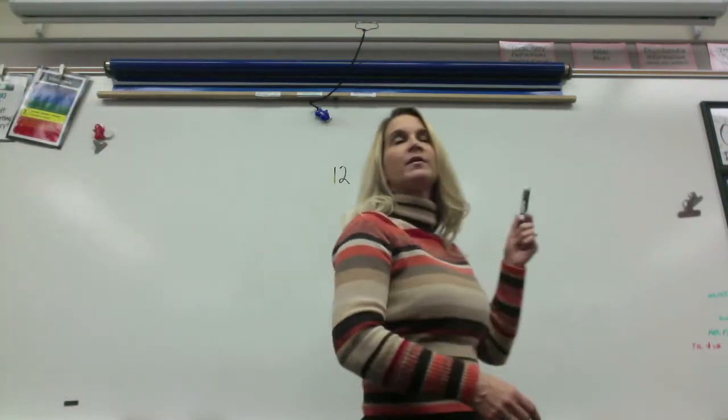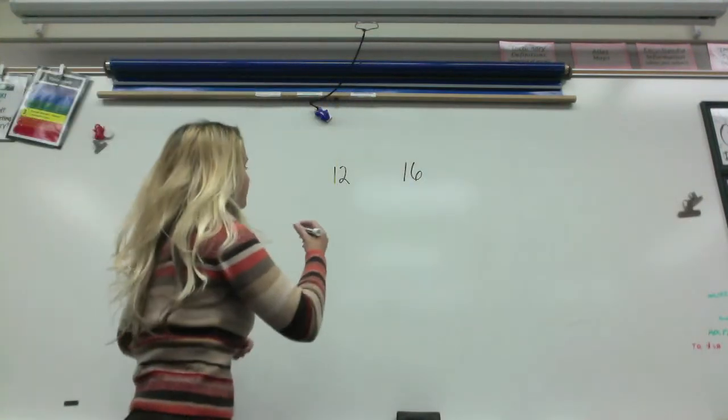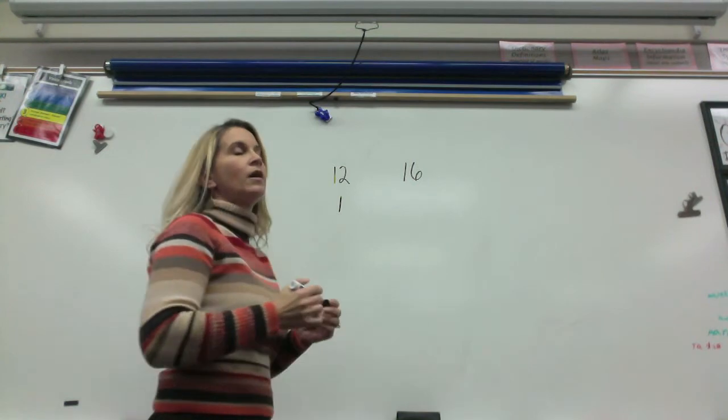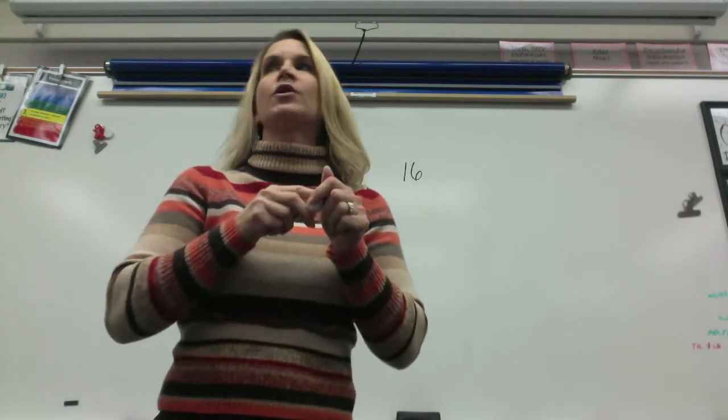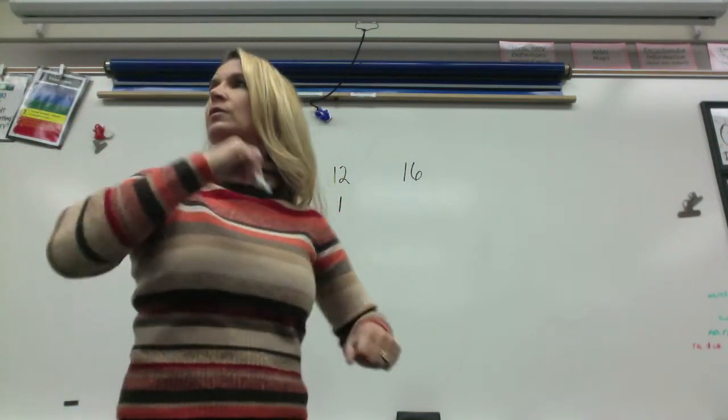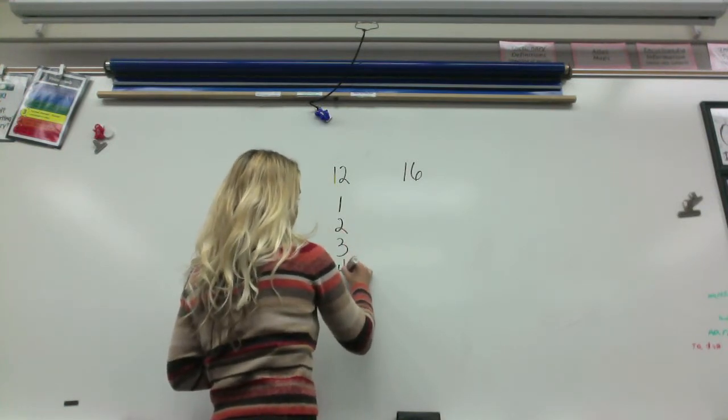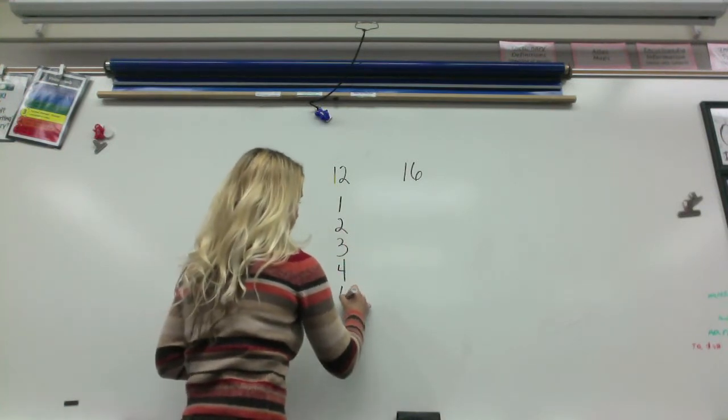Alright, who would like to read me the factors that they have for 12? Antonio. Oh, I want someone who's going to give them to me in order the right way. Daniel. One, two, three, four. Can we slow down? One, two, three, four. Okay. Six and five.